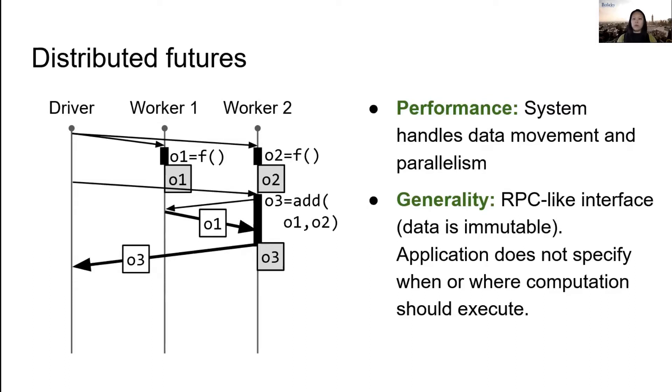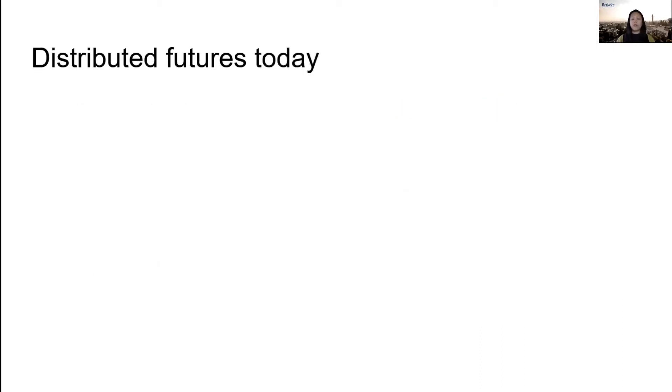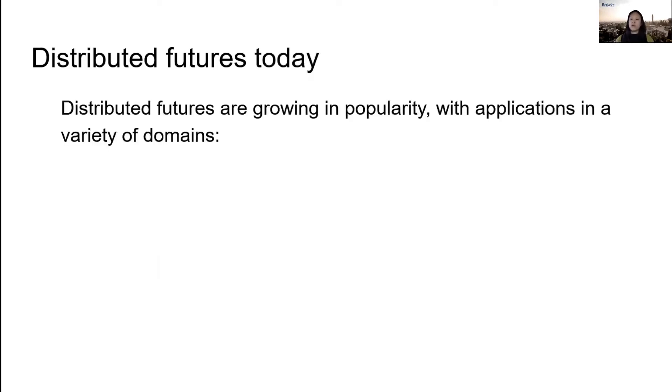Meanwhile, the system can manage data movement and parallelism for the application. By making the values in distributed memory immutable, we can keep the same semantics as RPC but support a wider variety of applications. Distributed futures are rising in popularity. Several systems today already implement distributed futures, even if they don't call themselves by that name.